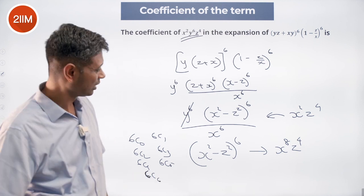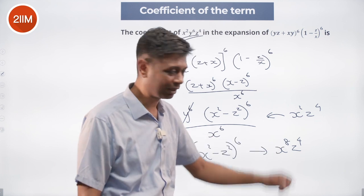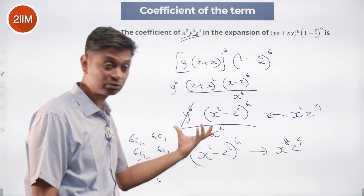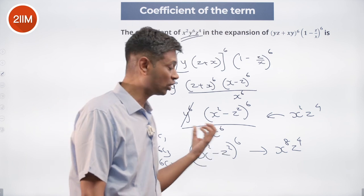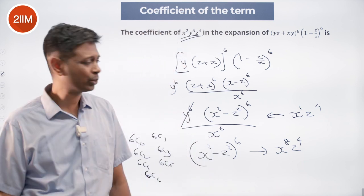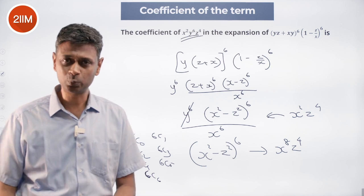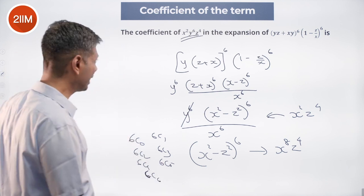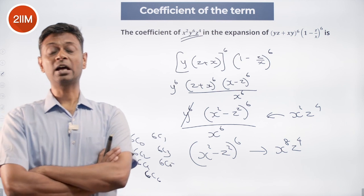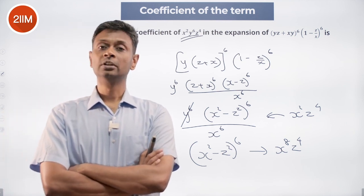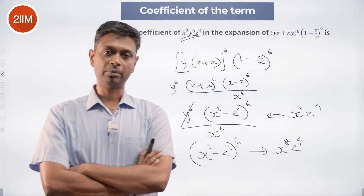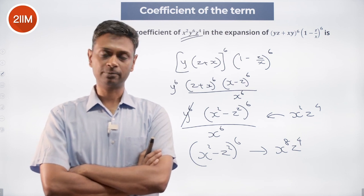Typical binomial expansion. There is an x power 8 and a z power 4. So, x square whole power 4 has to be there, and z square squared has to be there. Depending on which way you write it, you are either looking at 6C4 or 6C2. So we have to come back to that binomial formula: T(r+1) equals nCr into x power (n minus r) into x power r.